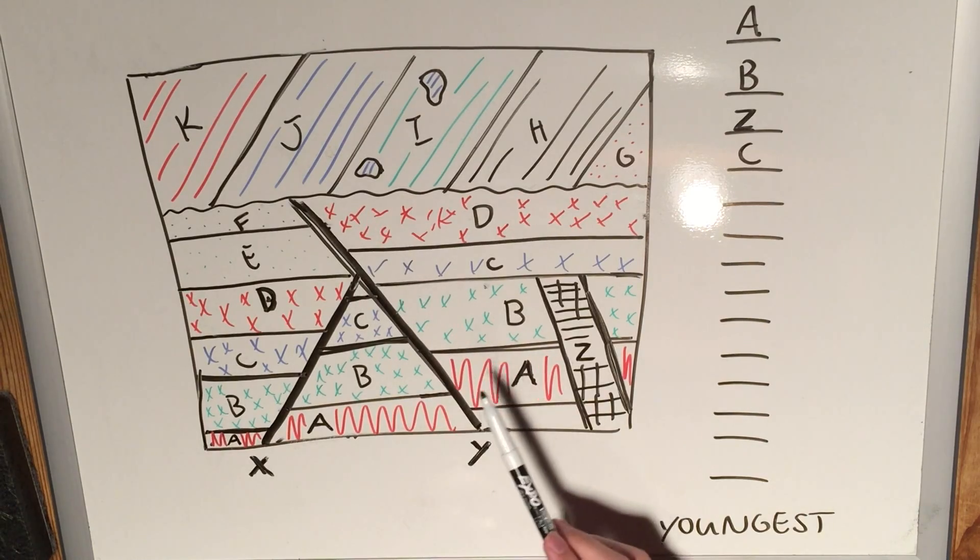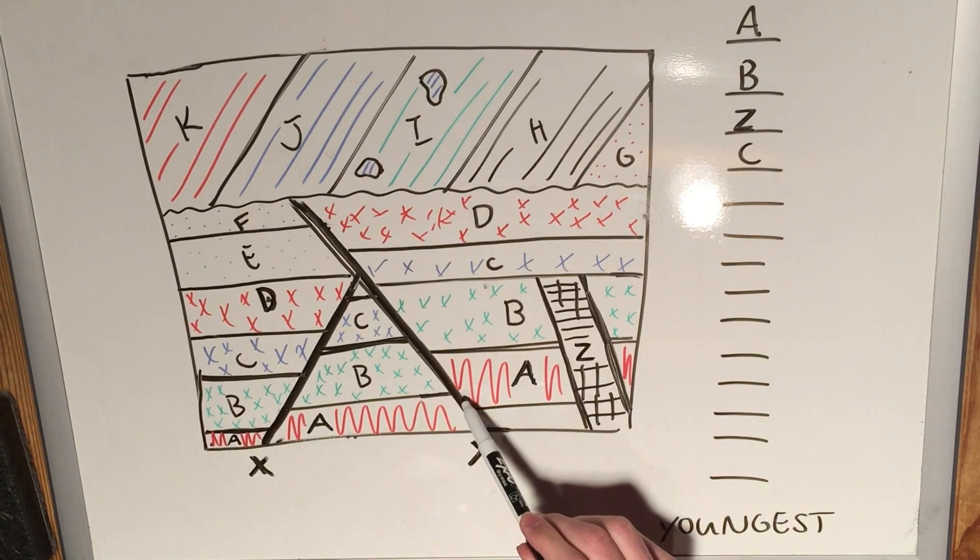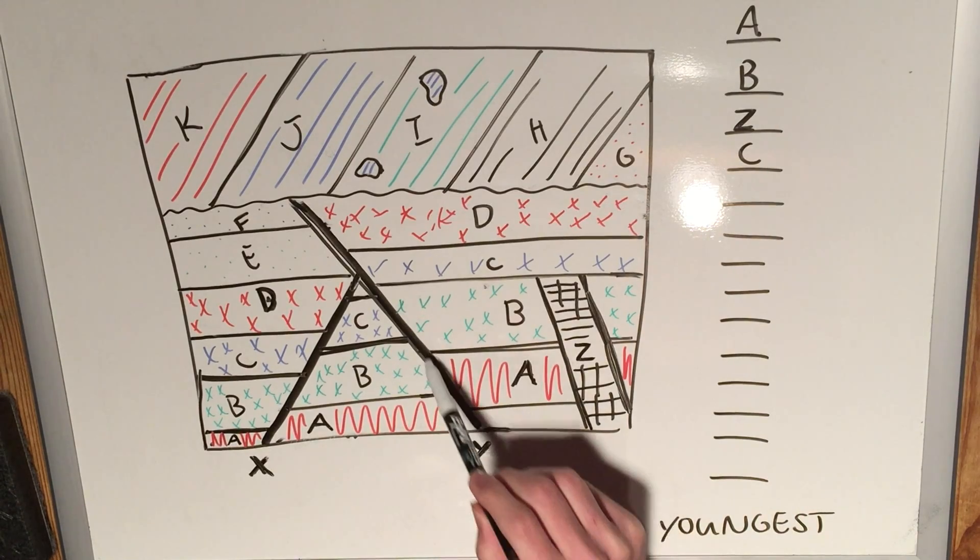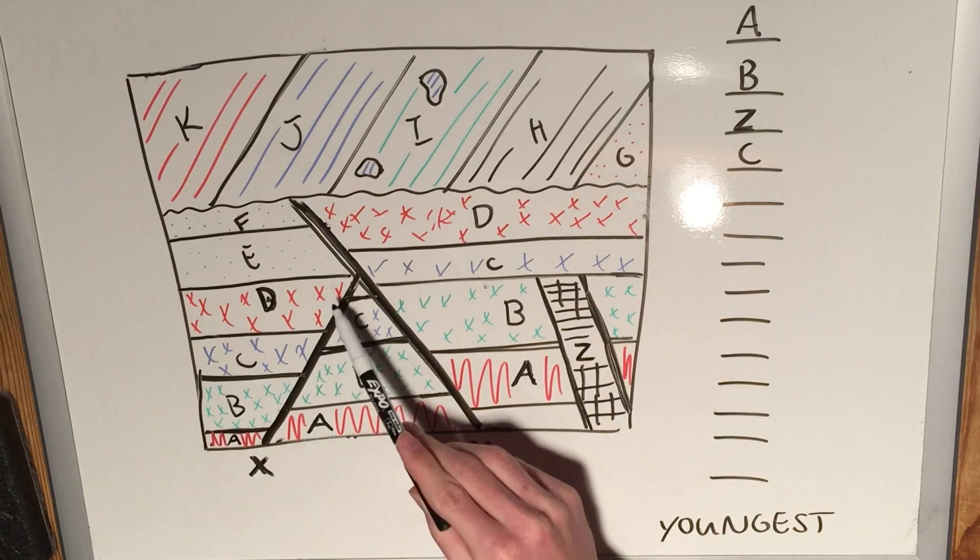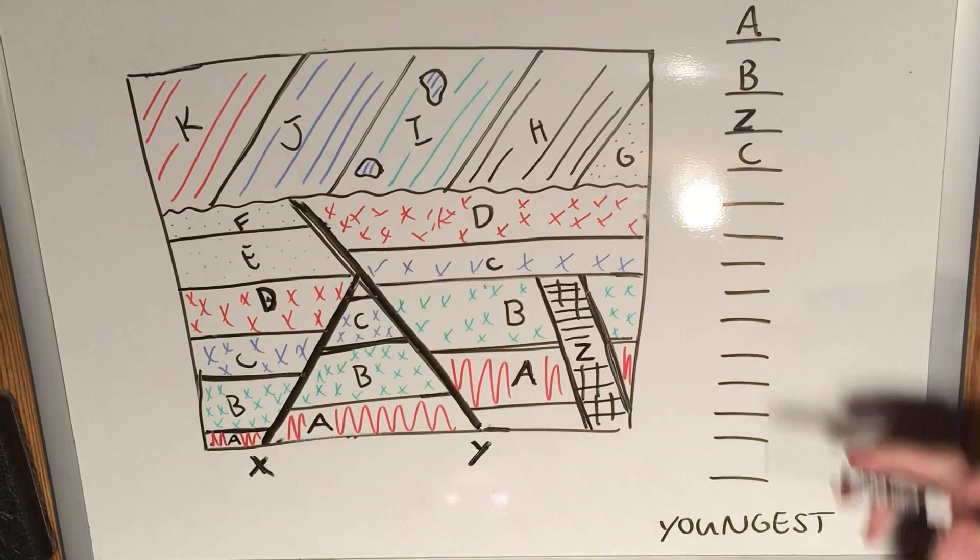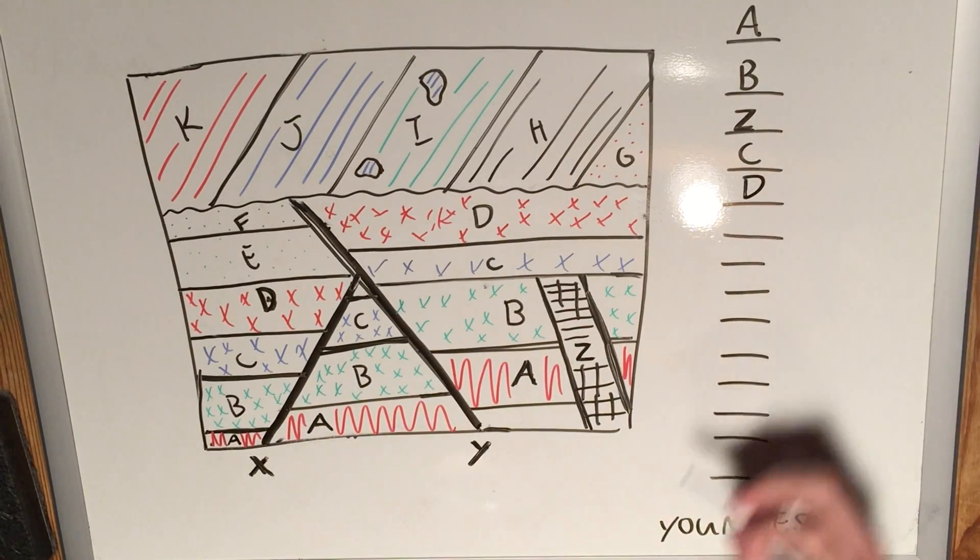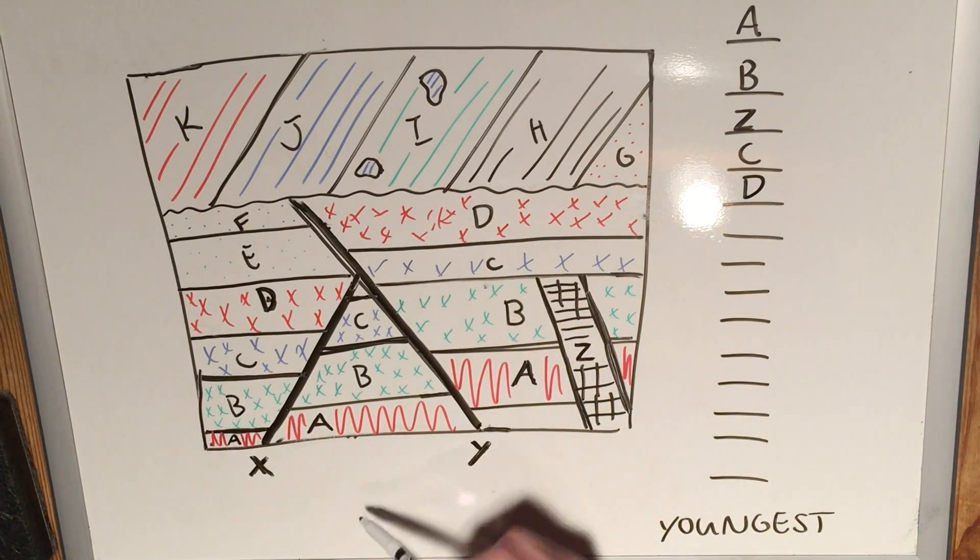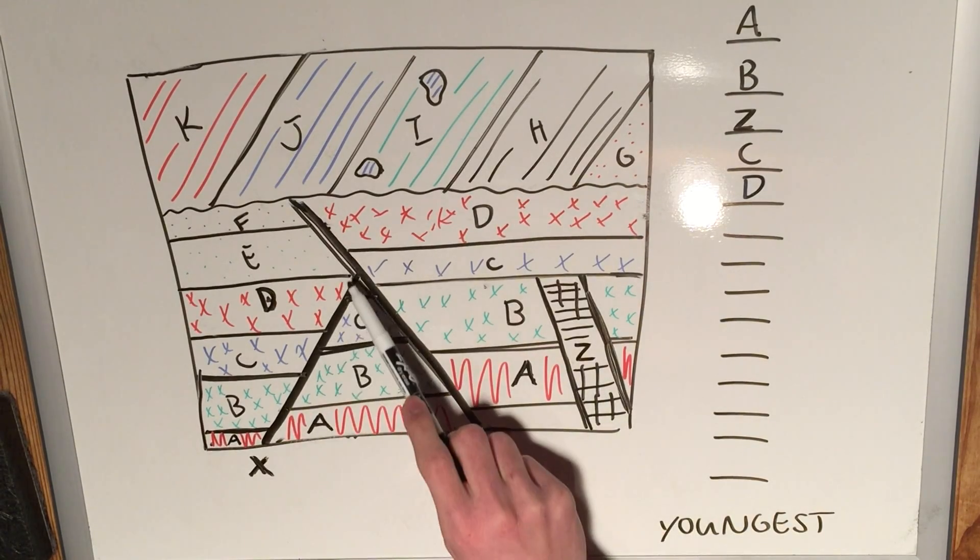And then we look at D compared to D here. Well, that sort of shift, that sort of dramatic shift, isn't apparent with any of these when they've just been affected by one fault. So D is most likely affected by both X and Y. I could have made the picture a bit more clear, but yes, D is the next one in the sequence.